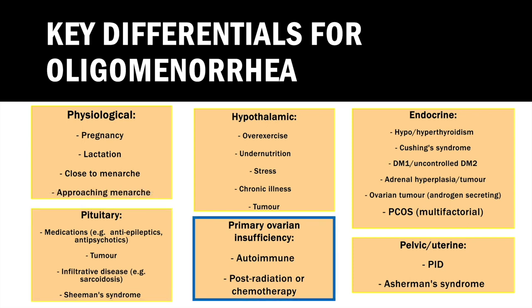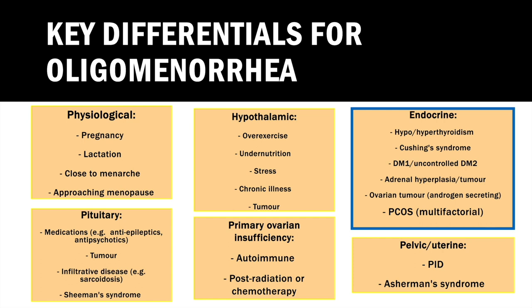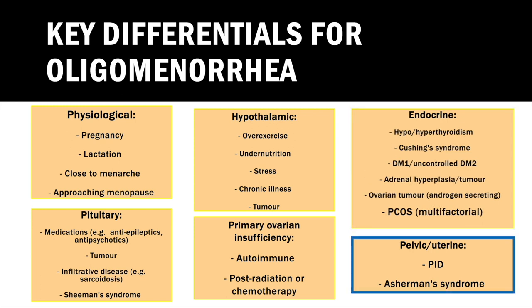You consider ovarian causes: primary ovarian insufficiency — an autoimmune condition — or loss of ovarian function after radiation or chemotherapy. You remember that PCOS, a multifactorial condition, is the most common cause of oligomenorrhea. Other endocrine causes include hypo- or hyperthyroidism, Cushing's syndrome, diabetes, adrenal hyperplasia, and adrenal tumour. You also consider pelvic inflammatory disease and Asherman's syndrome — intrauterine adhesions secondary to surgery, or in developing countries genital TB — which can impair menstrual outflow.